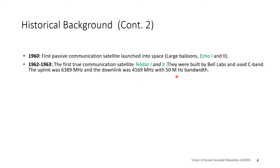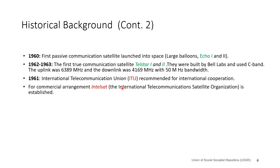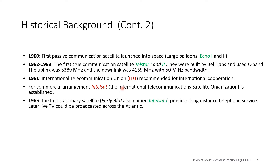Telstar used the C-band frequencies — specifically around 6 GHz uplink and 4 GHz downlink — with a bandwidth of 50 MHz. In 1961, the International Telecommunication Union (ITU) was established to recommend international cooperation. For commercial arrangements, Intelsat — the International Telecommunications Satellite Organization — was established. Then in 1965, the first geostationary satellite, Early Bird (Intelsat 1), provided long-distance telephone services and later enabled TV broadcasting across the Atlantic.